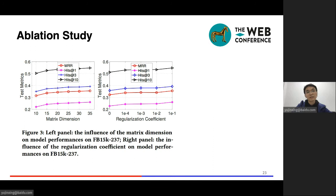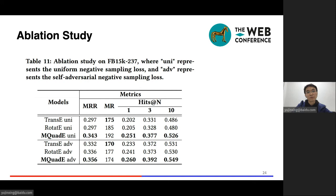In ablation study, we find that the performance improves with the increase of the embedding matrix dimension, and the regularization constraints of the relation matrix boosts the performance. MQuadE is better than the baseline methods with both uniform negative sampling loss and self-adversarial loss.